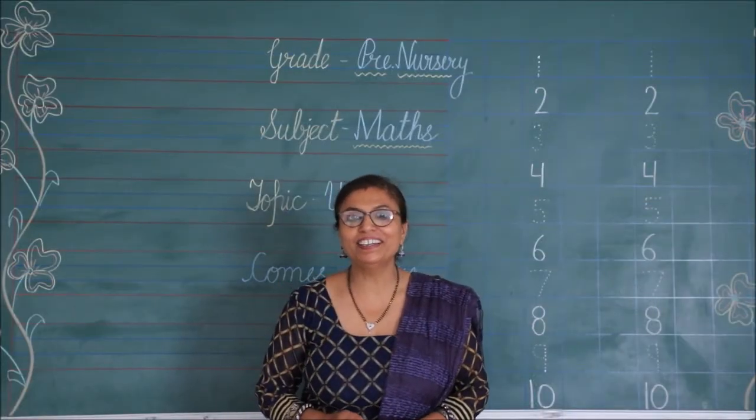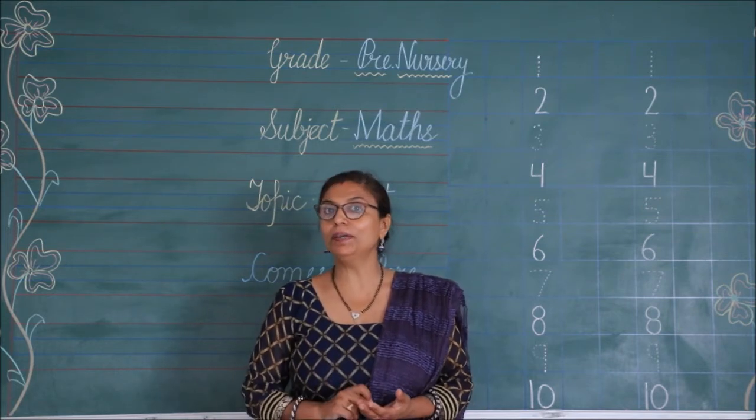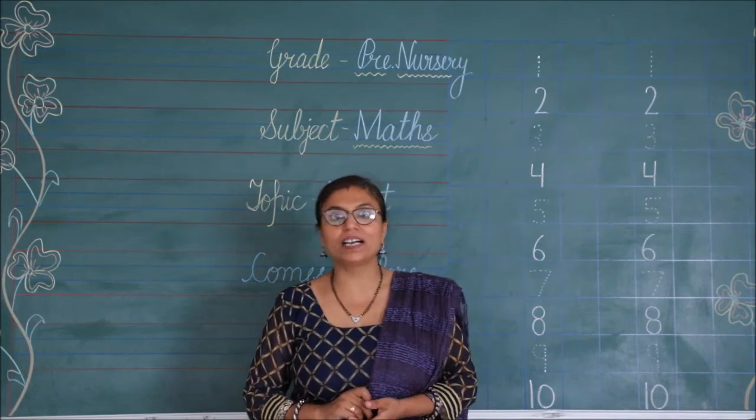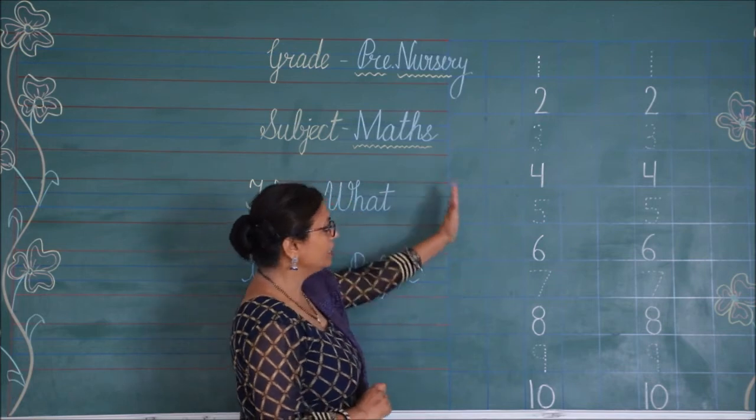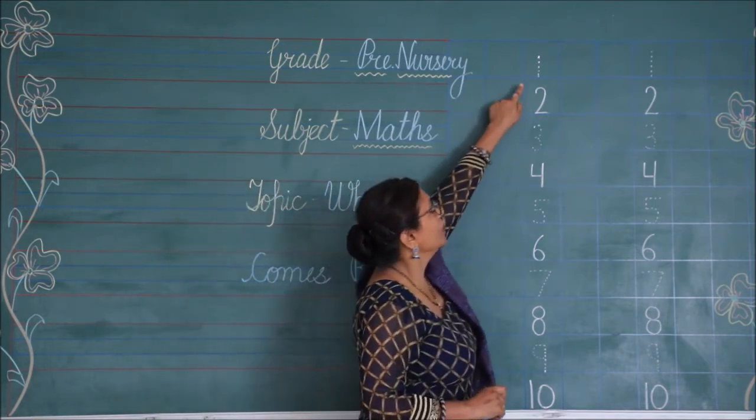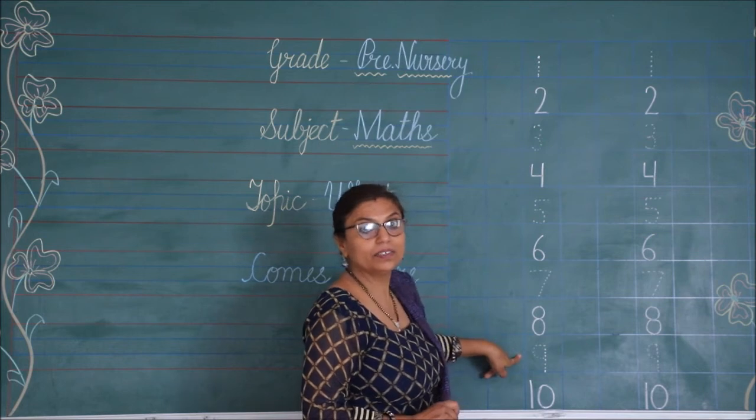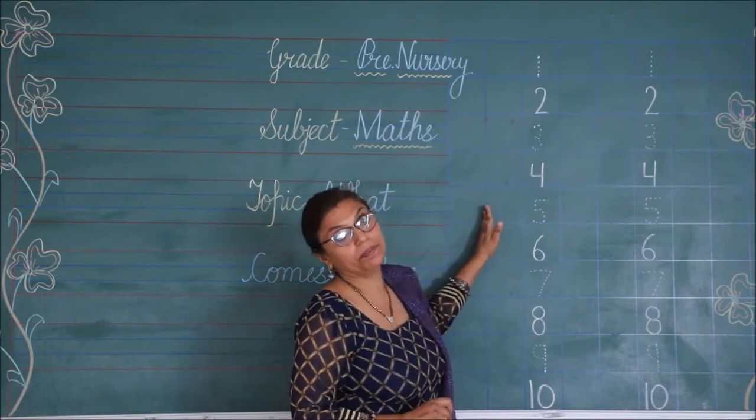So, dekha bachho aapne. Counting me before number kaise aata hai? Ab aapko ye before number ki activity page number 43 pe karna hai. Jo aaj ka aapka homework bhi hai. So, now see on the board. What is there on page number 43? Pattern of numbers is detailed like this in the book.